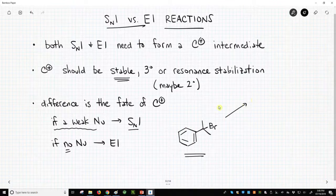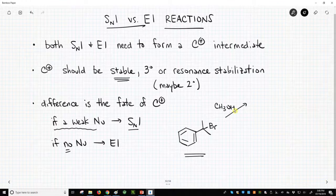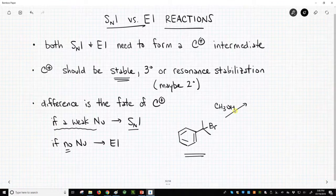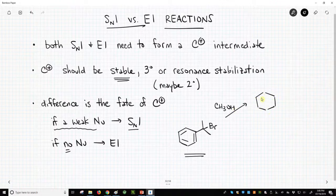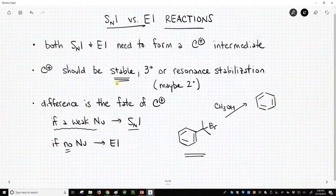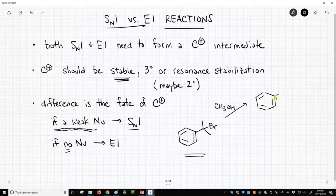The SN1 pathway might look more like a solvolysis. We could react this with methanol, polar protic solvent, or ethanol, or water, one of these polar protic solvents, and we would expect to get the SN1 product. We're having a stable carbocation and we have a weak nucleophile. We will get the SN1 product.